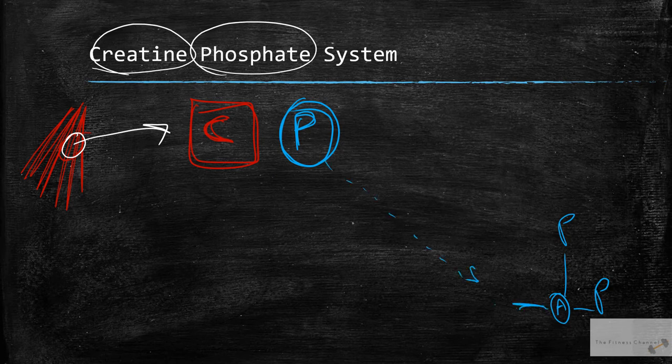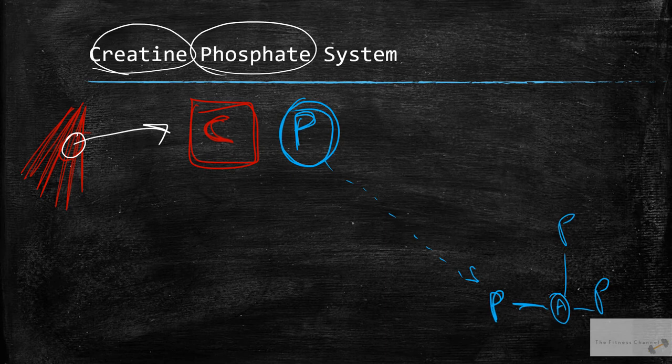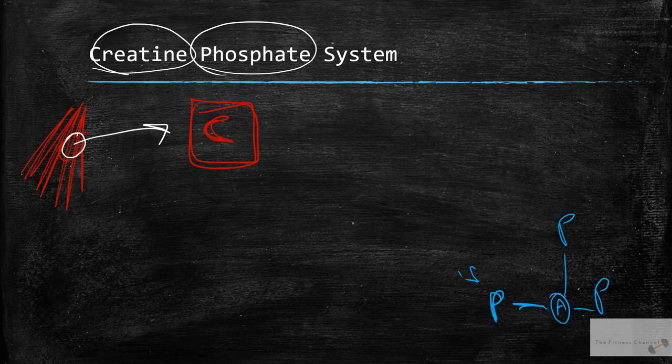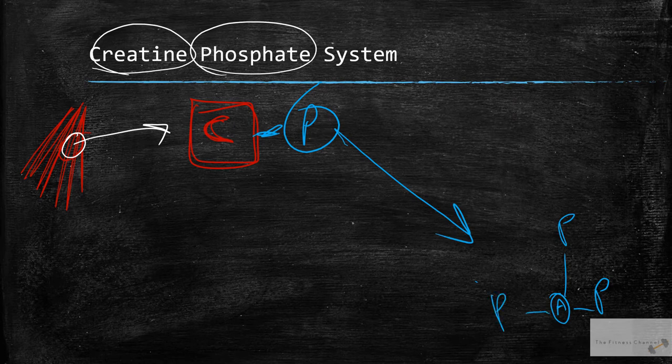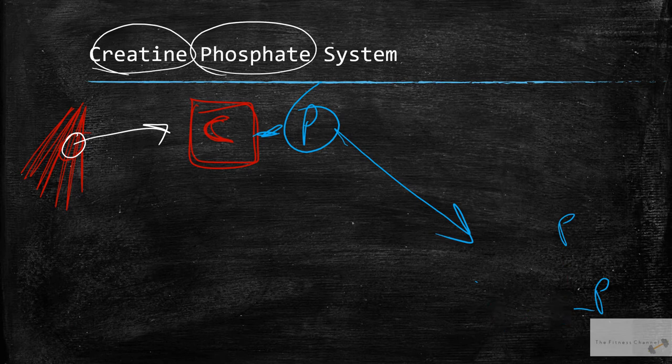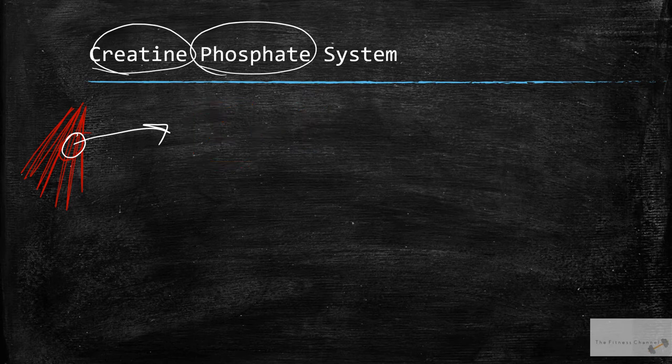This phosphate then travels neatly over to here, attaches on, and then what we've basically remade is ATP. That's as simple as it works. So you have ADP, you need ATP, you've got a little phosphate sat over here, you need it, it goes over there, it remakes ATP. That is the creatine phosphate energy system.